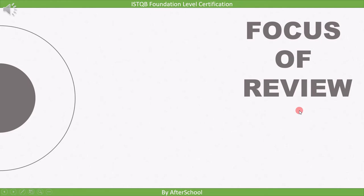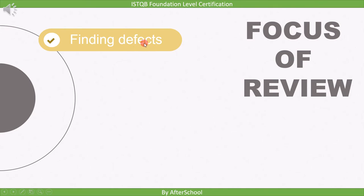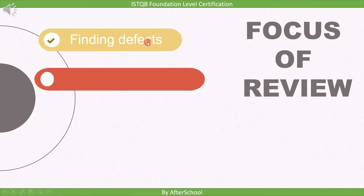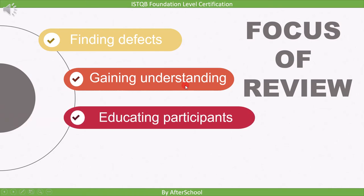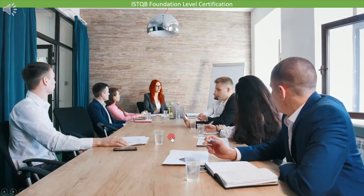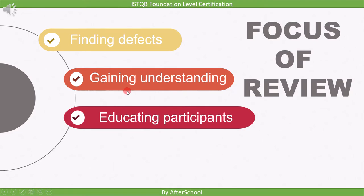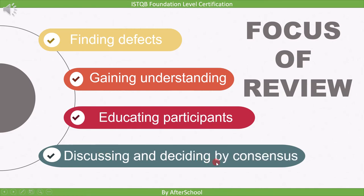Now let's see the focus of review. The first point is finding defects — the prime objective of review is to find defects in the work product. The second point is gaining understanding, and the third point is educating participants. During the review process, a review meeting is conducted where all the stakeholders are present and the team discusses the review item. By doing this we increase the understanding of each team member, which also helps new team members get into the topic.